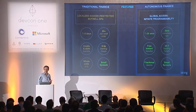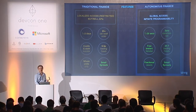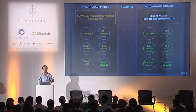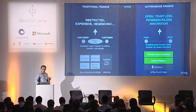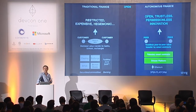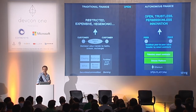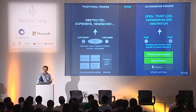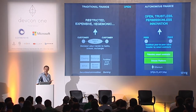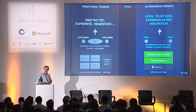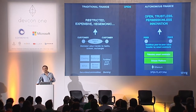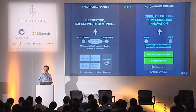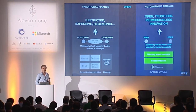Other benefits include 24/7 trading — it's very restrictive only being able to trade with good liquidity roughly 9 to 5. The key aspects of the system are that it's open and trustless, which enables permissionless innovation — very different to what we have today. The current system is restricted, expensive, and hegemonic. The question is how we get to a place where people can truly innovate and provide access to those who don't have it.